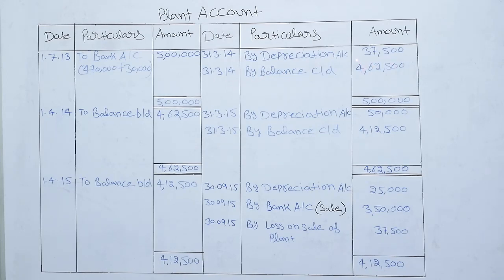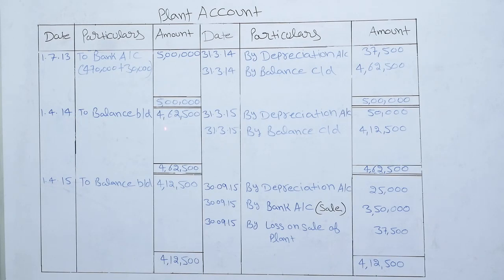Depreciation from 1st July to 31st March gives Rs 37,500. If we deduct Rs 37,500 from Rs 5,00,000, we get on 31st March 2014 a balance carried down of Rs 4,62,500. This balance will go down to the next year. On 1st April 2014, balance brought down is Rs 4,62,500. There is no adjustment in the second year, so we will charge depreciation for the entire year.